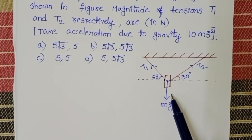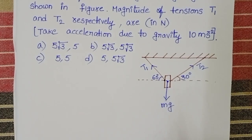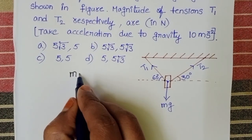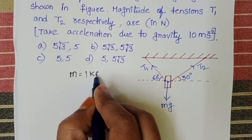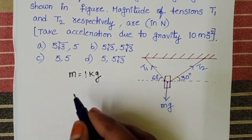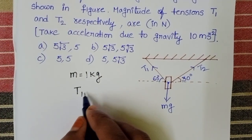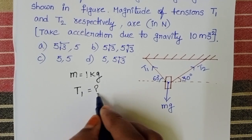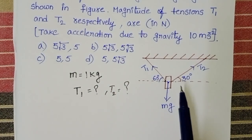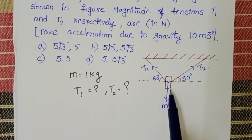This is the given diagram. Mass of this body is 1 kg and it is suspended with the help of two strings. We have to find out the values of T1 and T2. From this diagram it is clear that this body is at equilibrium position.